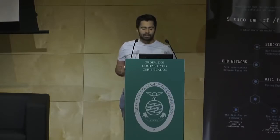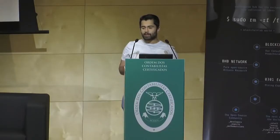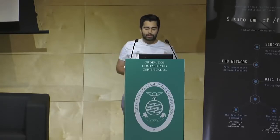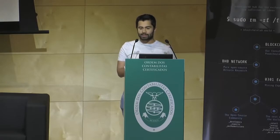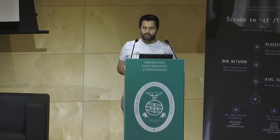There are two ways of dealing with this: retroactive transparency, which is what certificate transparency does, and proactive transparency, which is what systems like Bitcoin do. Certificate transparency is a system created by Google for use in Chrome, designed to deal with the problem of certificate authorities signing rogue certificates. For a TLS certificate to be accepted as valid by Chrome, the certificate authority must submit every certificate to Google's append-only Merkle tree log server, making every certificate ever signed transparent and publicly known.